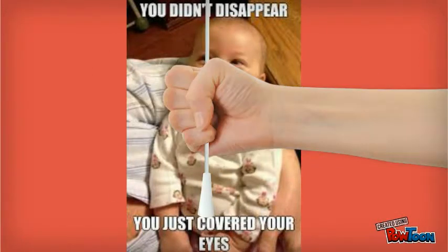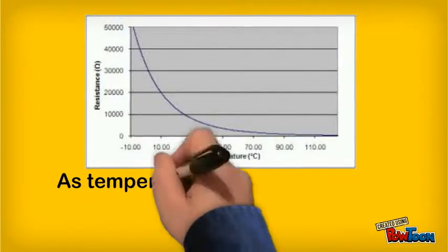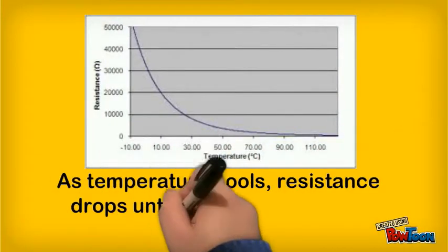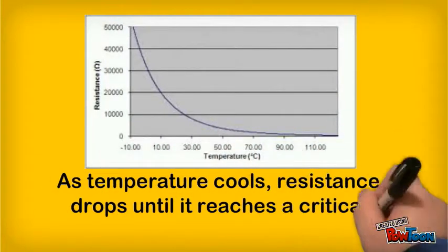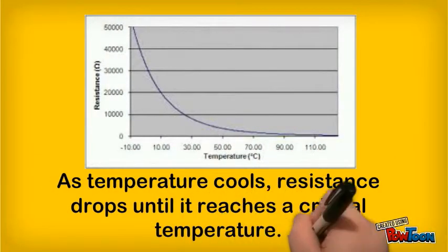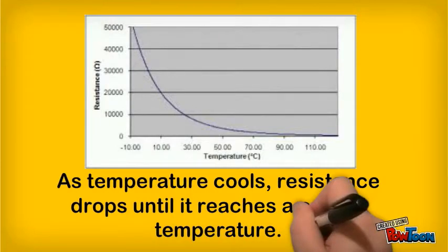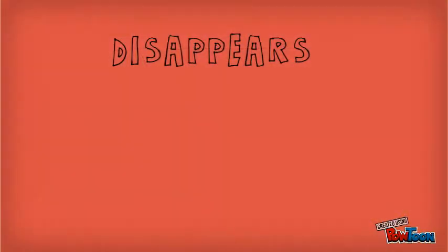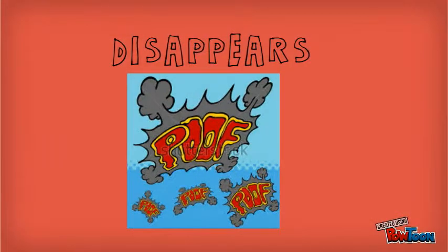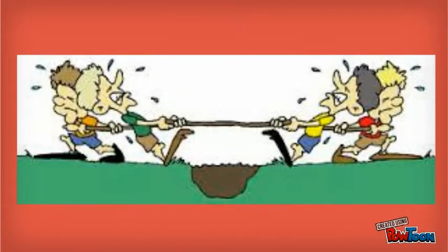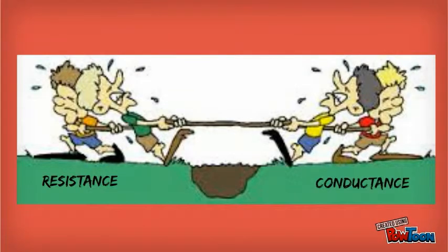Superconductors work a bit differently. As a superconductor cools, it follows a similar curve of gradually dropping resistance until it reaches its particular critical temperature. Then, abruptly, all resistance disappears — as if resistance were slowly losing its hold, and then, frustrated, lets go entirely.